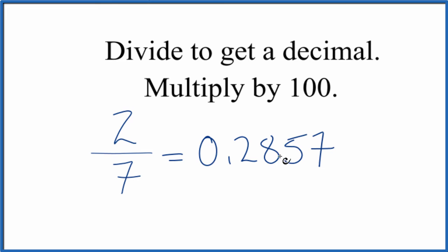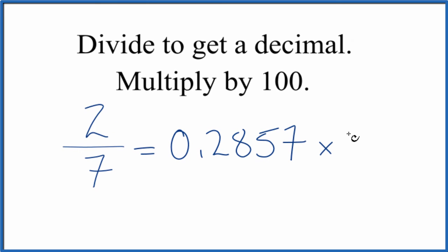So 0.2857, we multiply that by 100, and that's going to give us our percent. We multiply by 100, we get 28.57 percent. And if you need to have more decimal places, you could just keep going with your division.